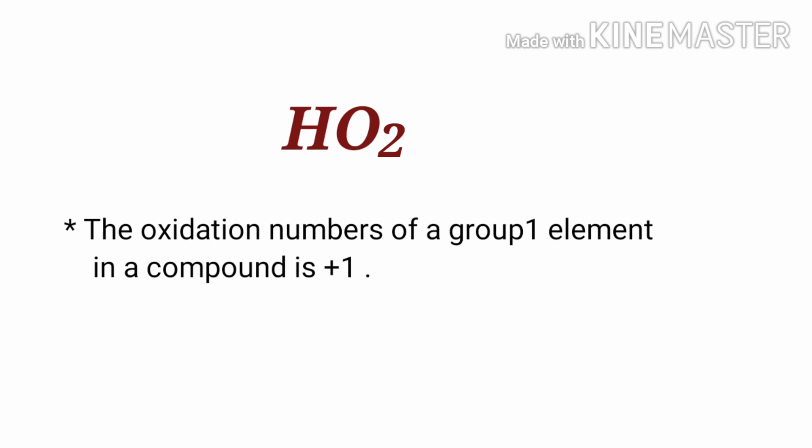By the rules of assigning oxidation numbers, the oxidation number of a group one element in a compound is plus one. Hydrogen is a group one element, so the oxidation number of hydrogen is plus one.